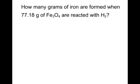Let's start with a problem. We want to determine how many grams of iron are formed, that is, are a product, when 77.18 grams of iron oxide are reacted with hydrogen. So let's go ahead and put together a chemical equation. There's our iron oxide and our hydrogen producing iron and water. Now we have to balance that chemical equation. This is always our first step.